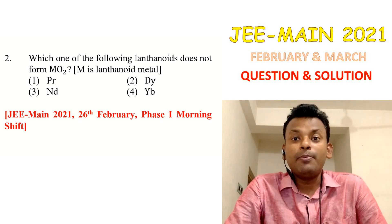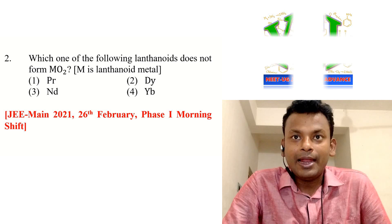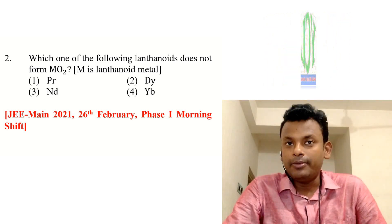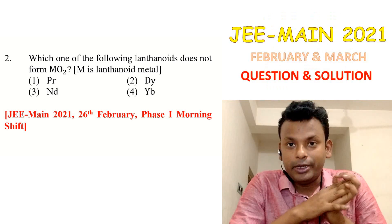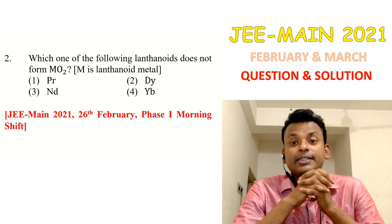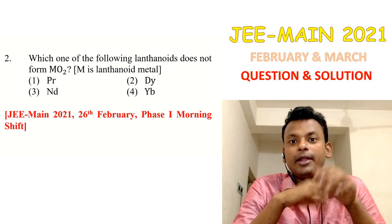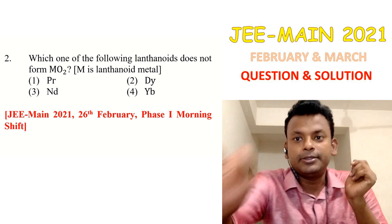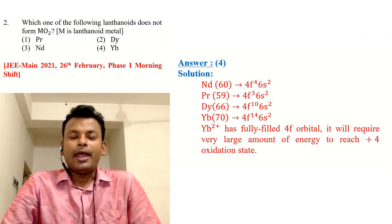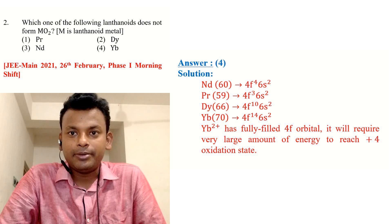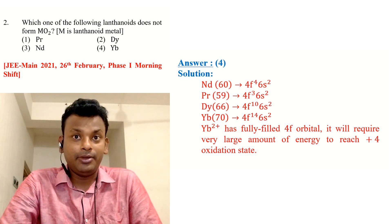Question 2: Which one of the following lanthanides does not form MO₂ (where M is a lanthanide metal)? Options are given. This question was set in JEE Main 2021, 26th February, page one, morning shift. Answer is option 4. All elements and their electronic configurations are given.